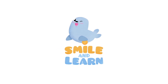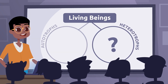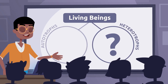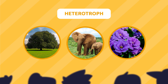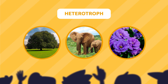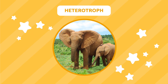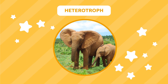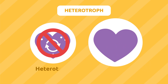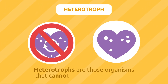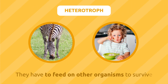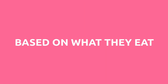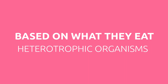Smile and Learn! Do you remember what a heterotrophic organism is? Let's find out which of these living beings is a heterotroph. That's right, the elephant is a heterotroph! But do you know why? Heterotrophs are those organisms that cannot make their own food — they have to feed on other organisms to survive.